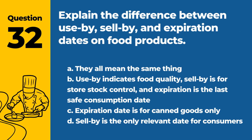Question 32. Explain the difference between use-by, sell-by, and expiration dates on food products. A. They all mean the same thing. B. Use-by indicates food quality; sell-by is for store stock control; and expiration is the last safe consumption date. C. Expiration date is for canned goods only. D. Sell-by is the only relevant date for consumers. Answer: B. The use-by date indicates the quality of the food, the sell-by date is used for store stock control, and the expiration date marks the last day the product is safe to consume.